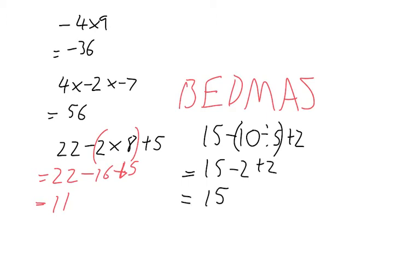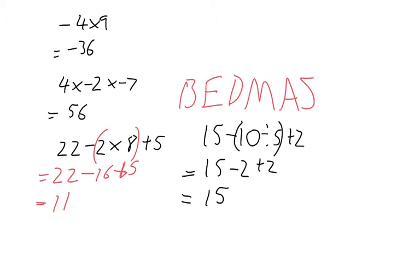If we've got negative 54 divided by negative 6, negative times negative is positive. 54 divided by 6 is 9. Now if you're looking at powers, we've got 2 to the power of 2 times 5 to the power of 2.